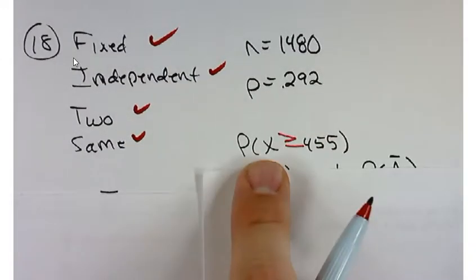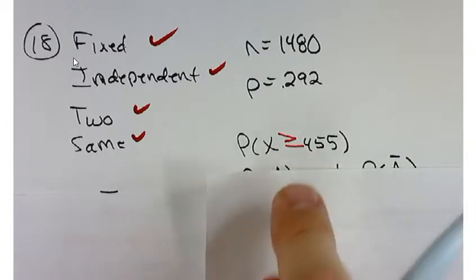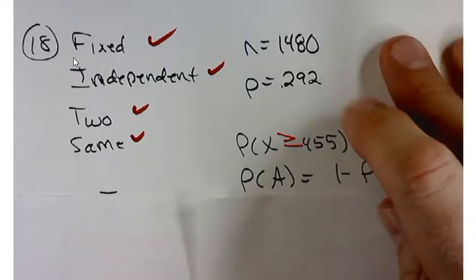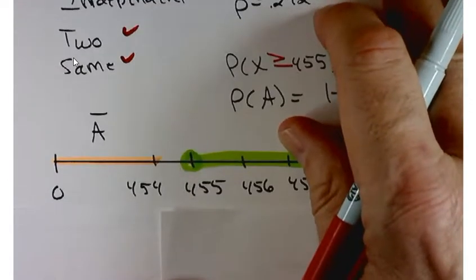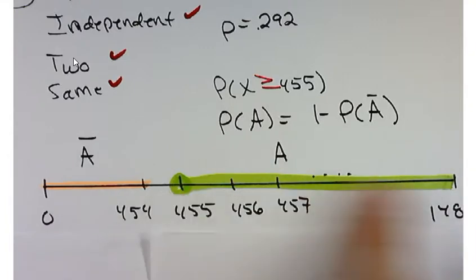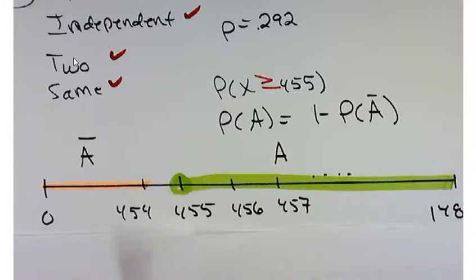So here's what we want to calculate. The probability that X is greater than or equal to 455. And that little equal to part is important. It might help us to calculate this using the complementation rule, but let's look at things visually. We want this probability here. I called it A. A is the event that you have at least 455 people who have sleepwalked.